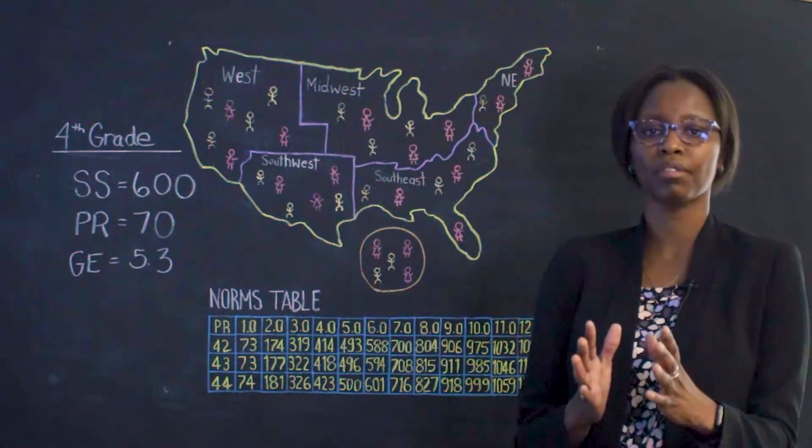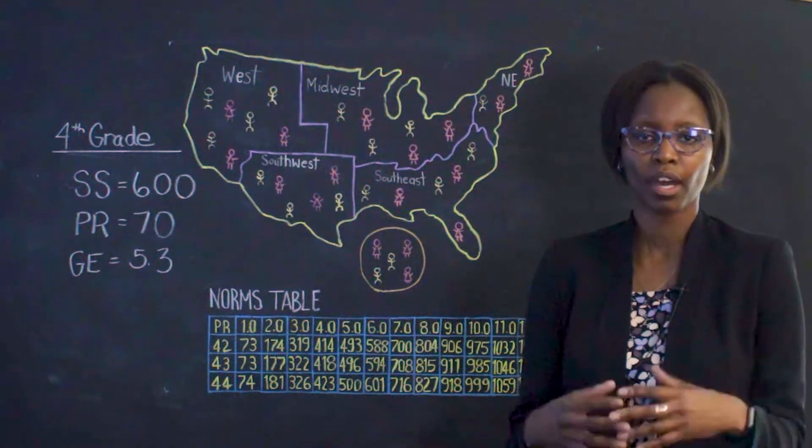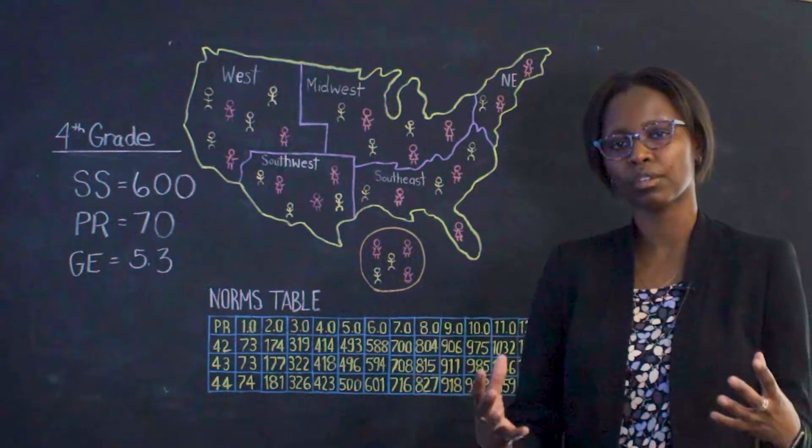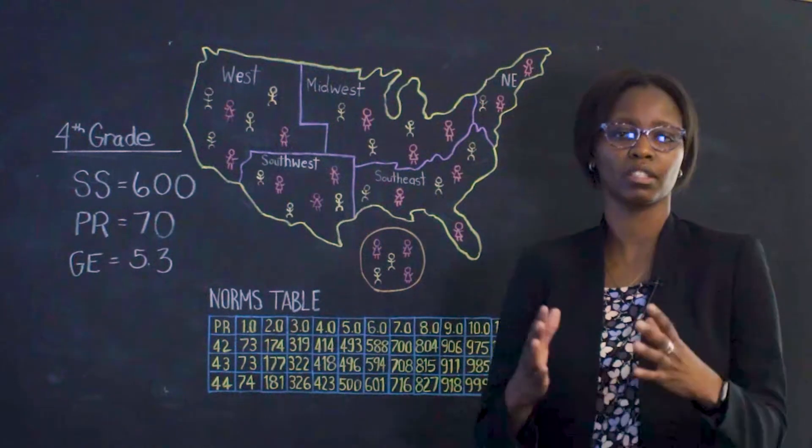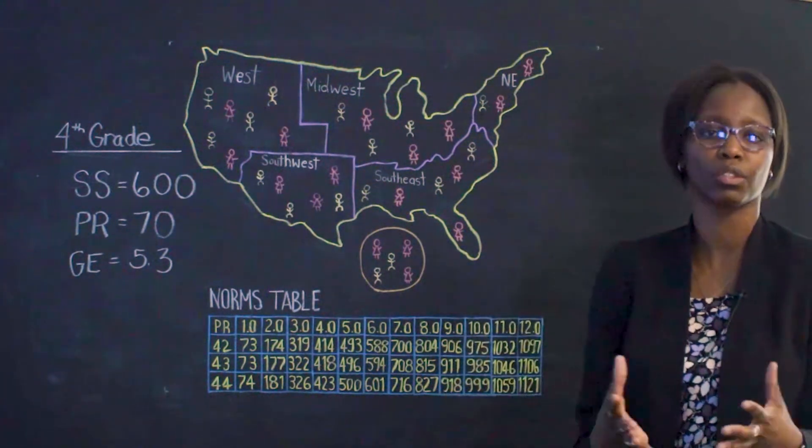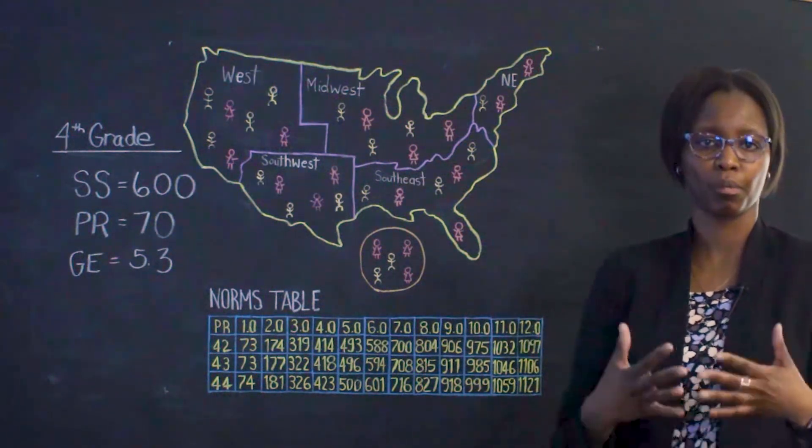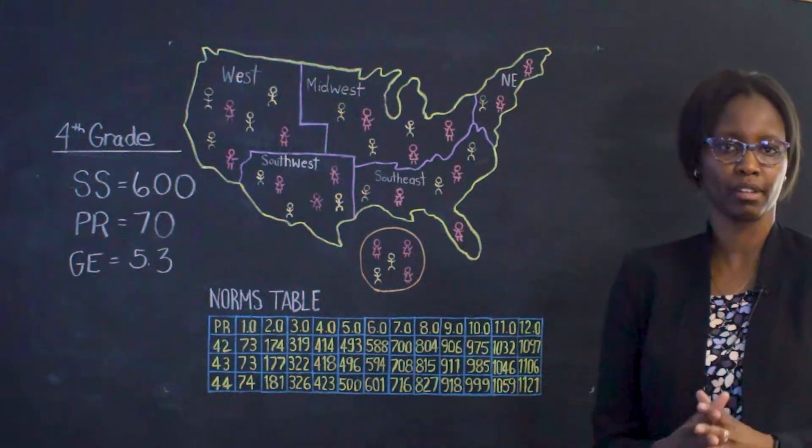And one of the ways to answer that question is to look at your norms. A norm, by general definition, is something typical. Just as it is typical for children to enroll in kindergarten when they turn five years old, norms in education tell us something about the typical performance by grade level.